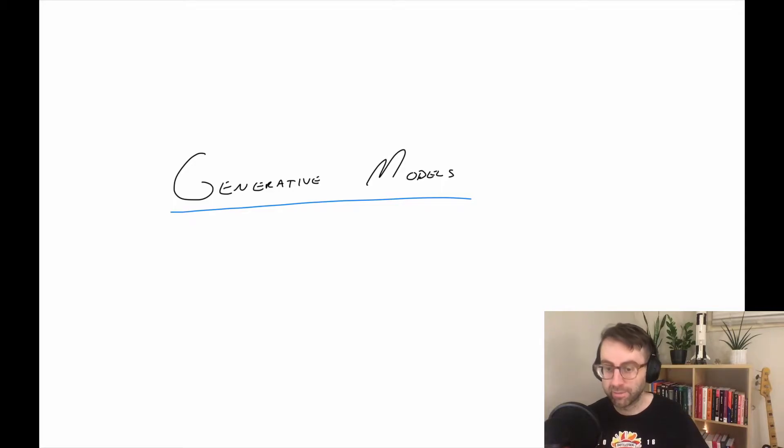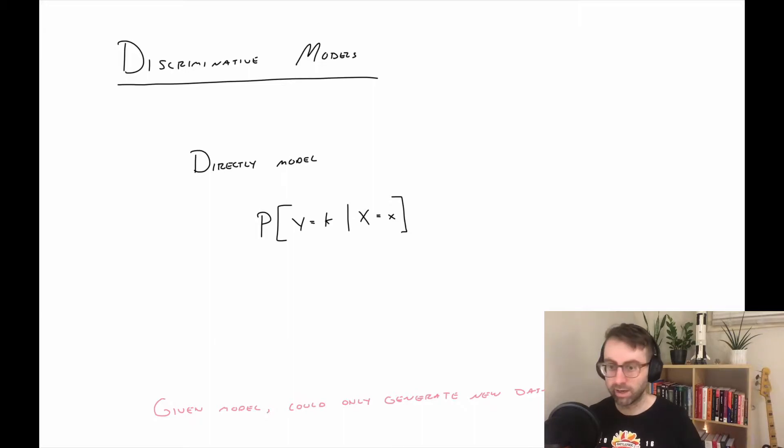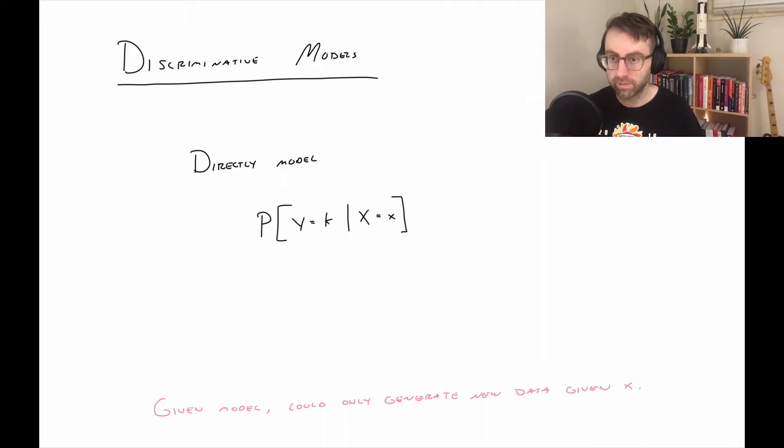And to talk about generative models, we first need to talk about a discriminative model. So discriminative models are a model that will directly model the conditional probability that we're interested in. So this is pretty much everything that we've done so far, but we just haven't called it this.